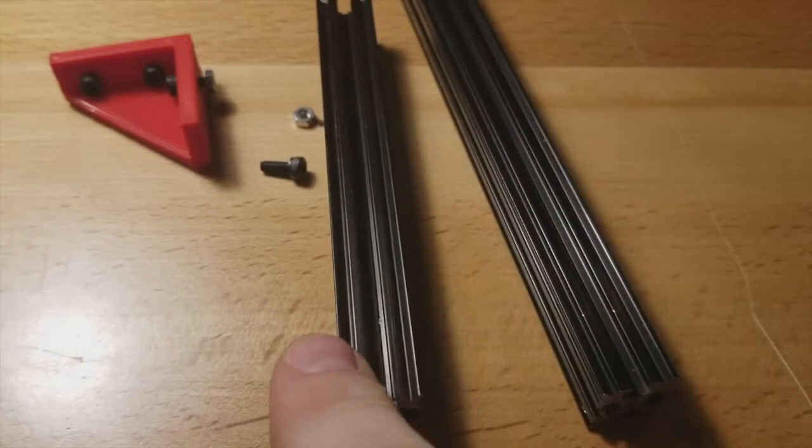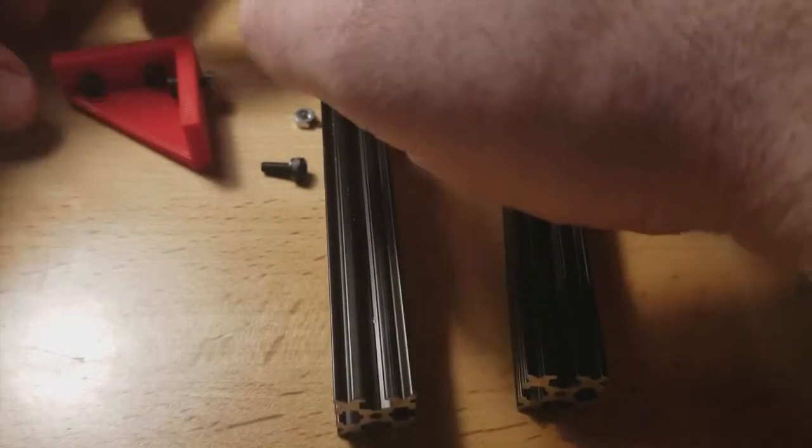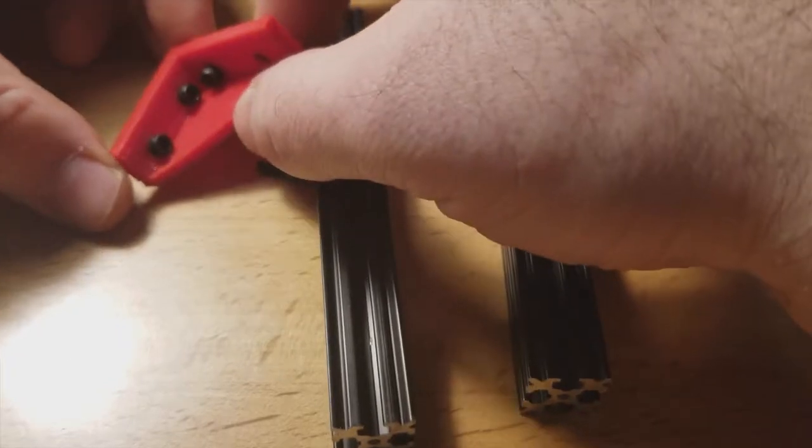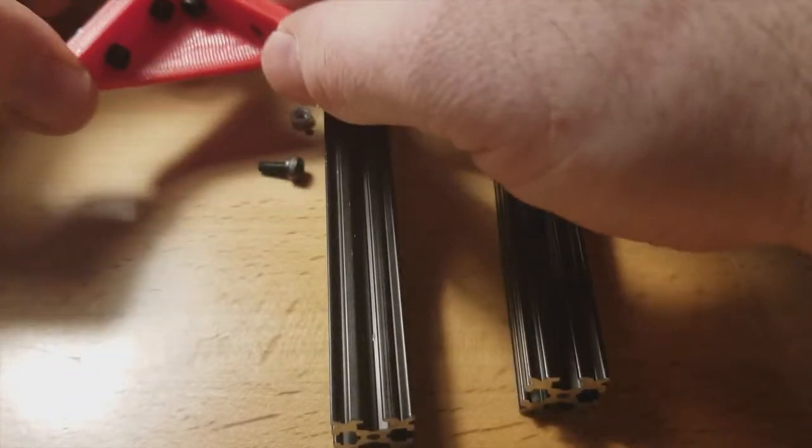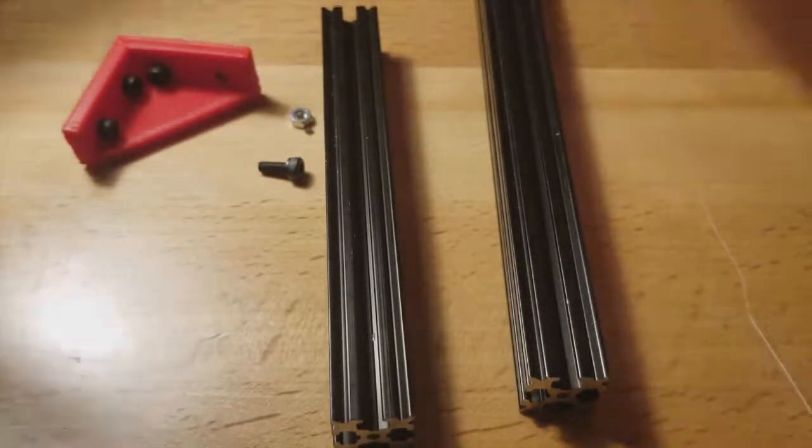What we have here is two pieces of open beam aluminum extrusion, and this is what Muggsy's frame is actually made out of. And right here we have one of these beefy 90 degree brackets. These make up the vast majority of connections within Muggsy's frame.